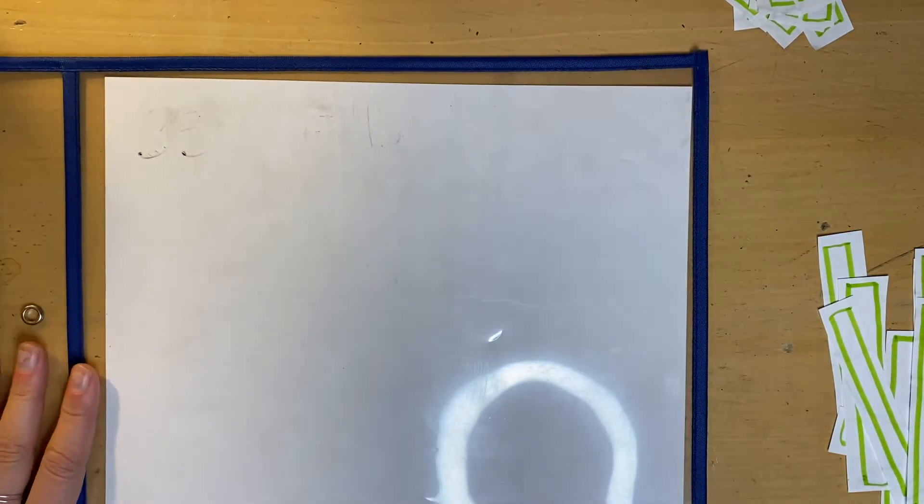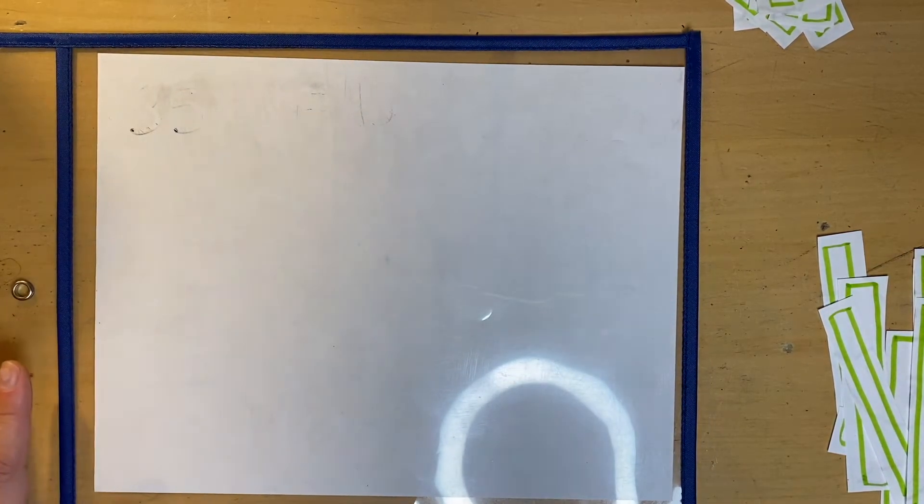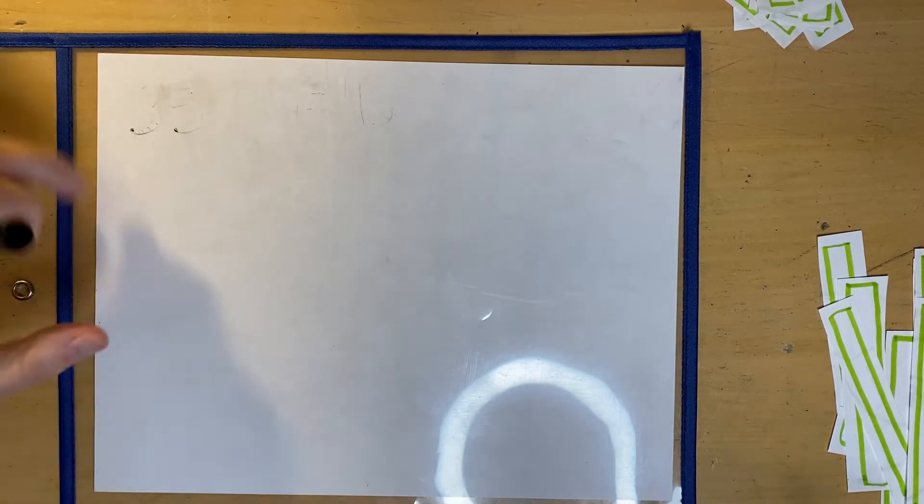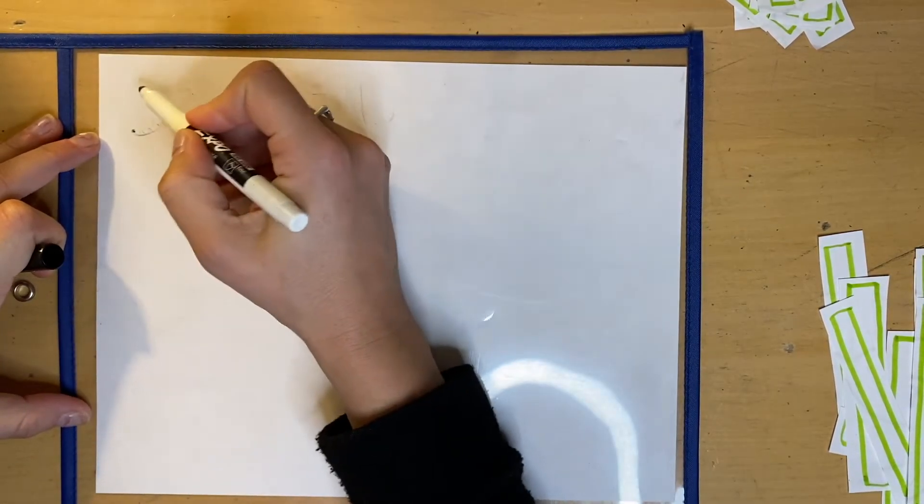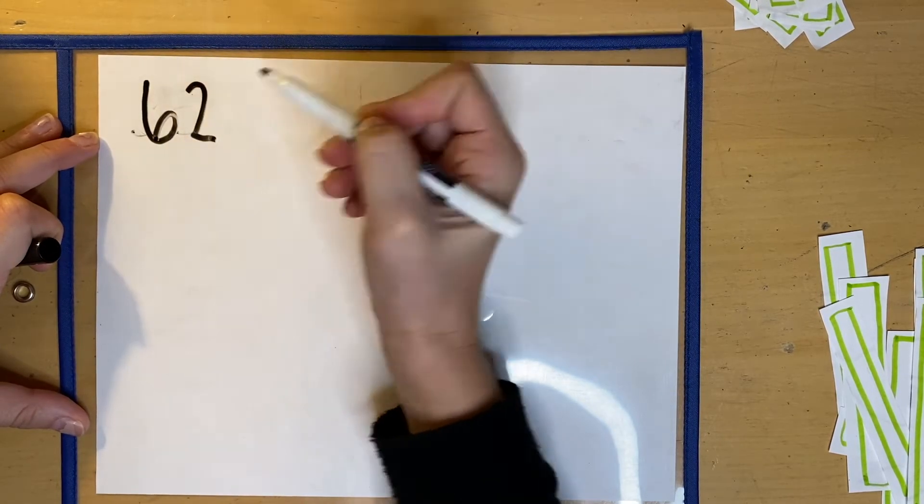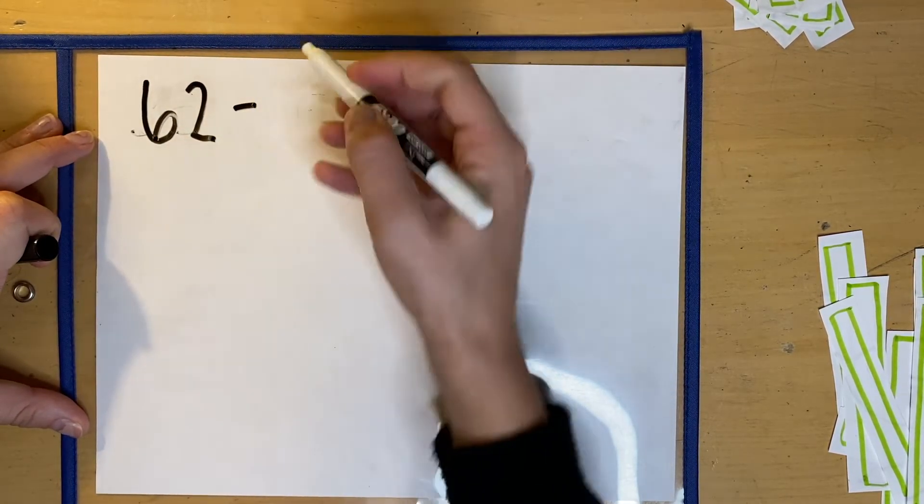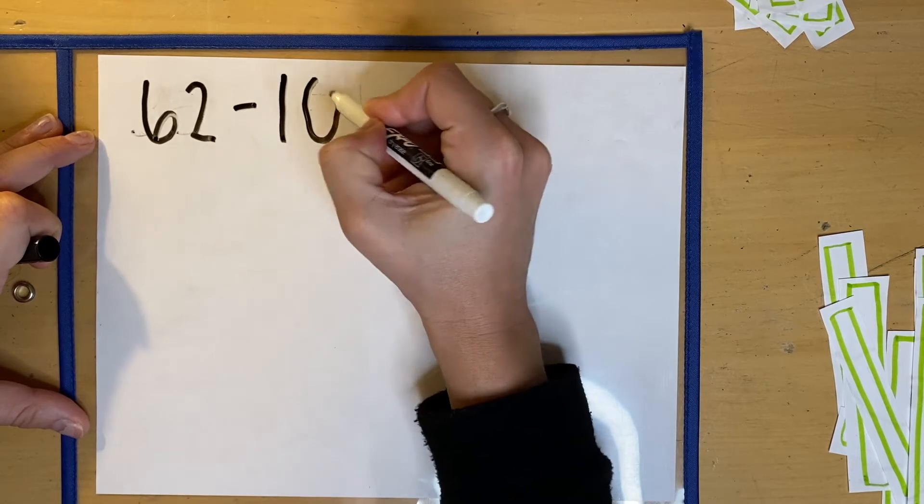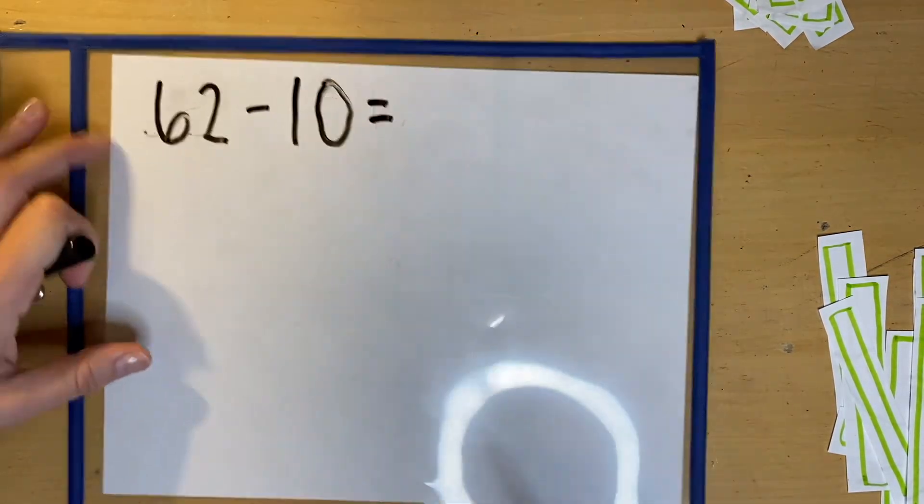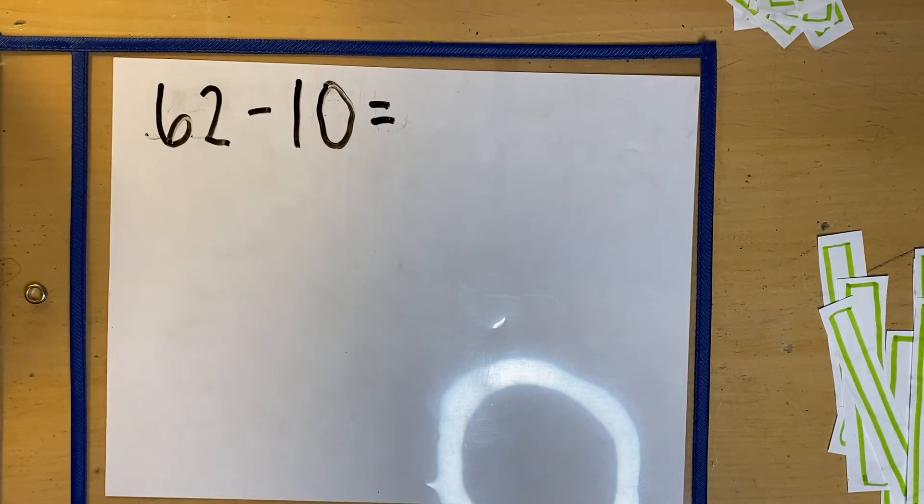Okay. Now this time I'm going to do a subtraction one and I'm going to use the number 62 and I'm going to subtract 10. So in order for me to show 62 minus 10, the first thing that I need to do is build the number 62. So go ahead and build the number 62 with me.